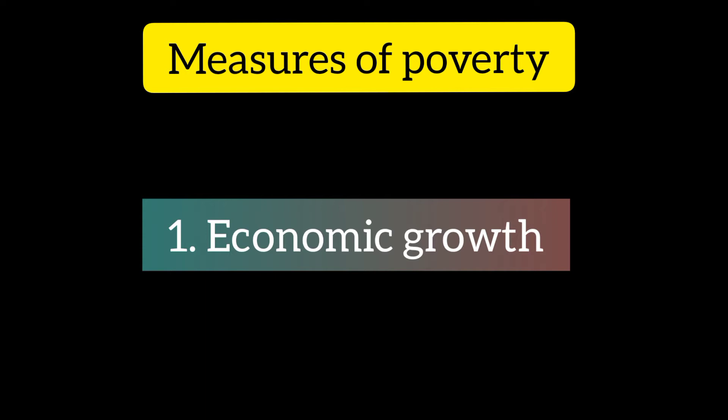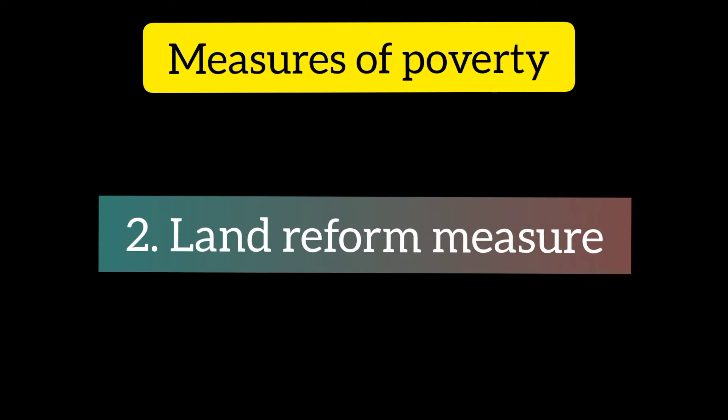Large-scale productive activities and a balanced distribution system can help in this regard. Number two: Land Reform Measures. Abolition of the zamindari system, security of tenants, fixation of rents, and equal distribution of surplus land among small and landless laborers are some of the land reform measures implemented by the government to remove rural poverty.